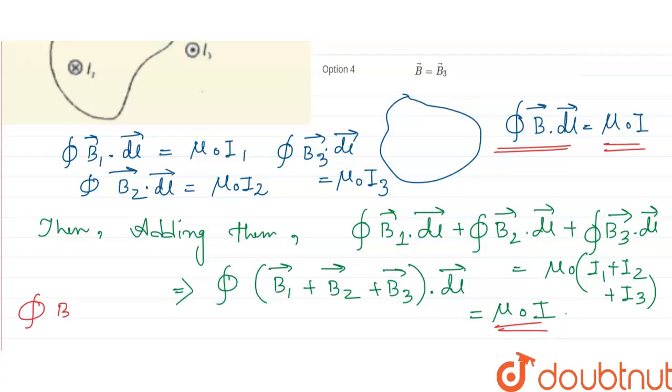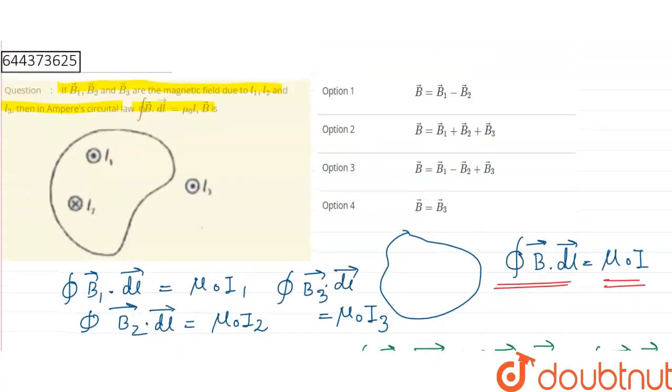So now we can write: B1 plus B2 plus B3 dot dl vector equals B vector dot dl. Now if we compare these left-hand side and right-hand side, we will get that B1 vector plus B2 vector plus B3 vector equals B vector. So the right option is option 2.